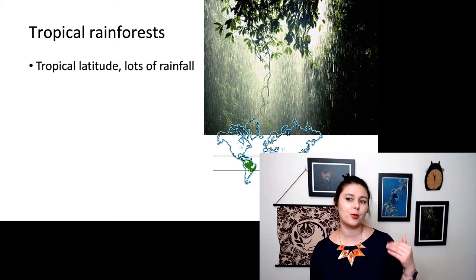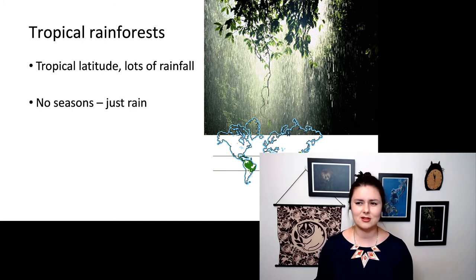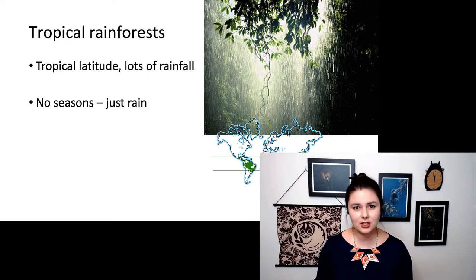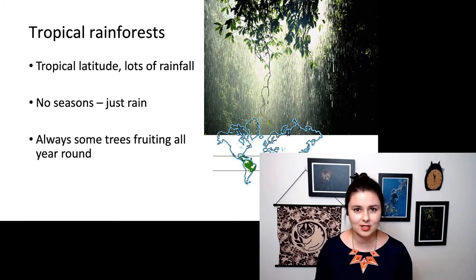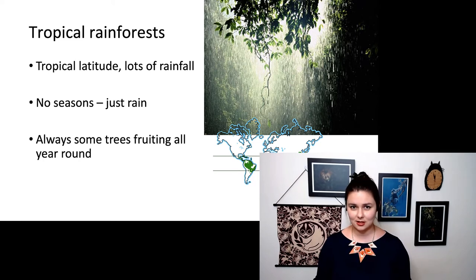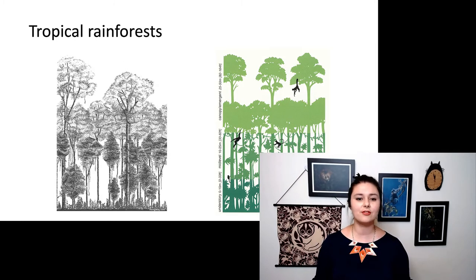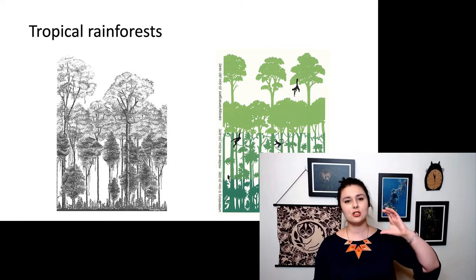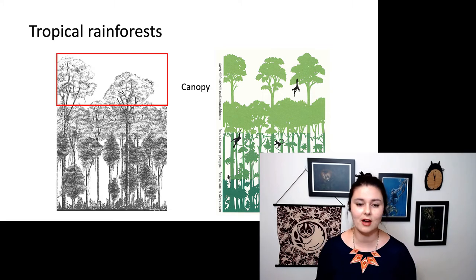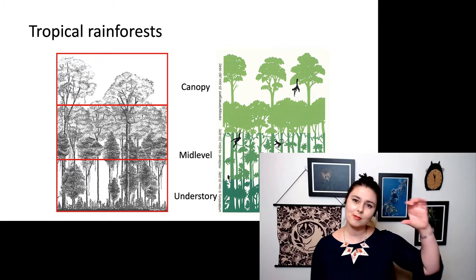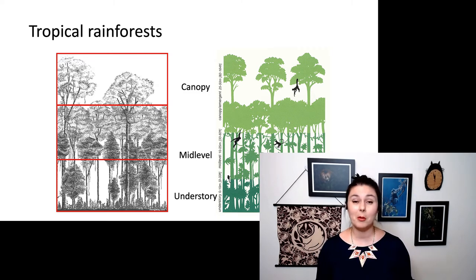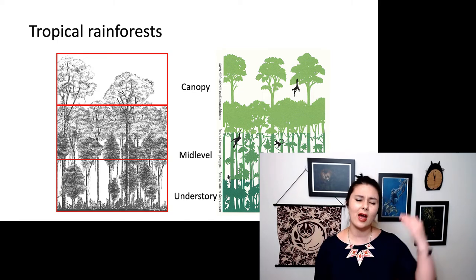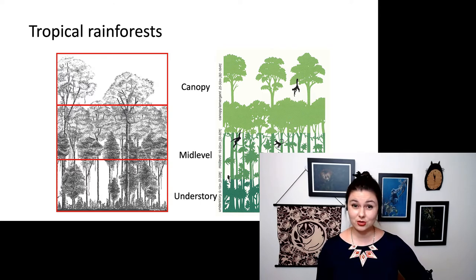One great habitat that we see a lot of monkeys in is the tropical rainforest — tropical latitude with a lot of rainfall. One cool thing about these environments is there aren't really any seasons; it's just raining. That means there isn't much difference in plant life throughout the year, so there are always some trees with fruit. A rainforest has several structural layers: at the top the canopy, then the mid-level, and lastly the understory. The canopy has a lot of light, but it's dense, so everything below has less and less light — the understory is actually pretty dark.